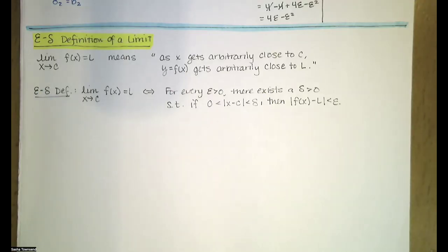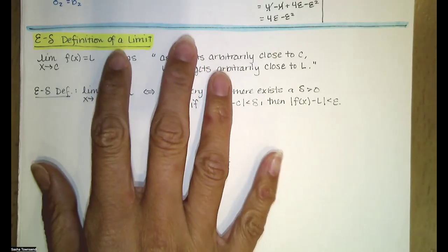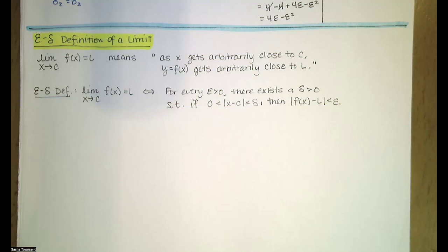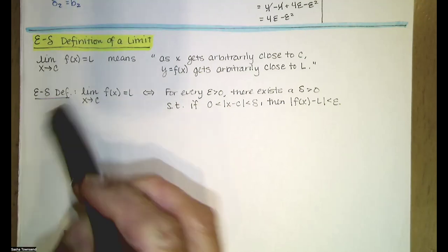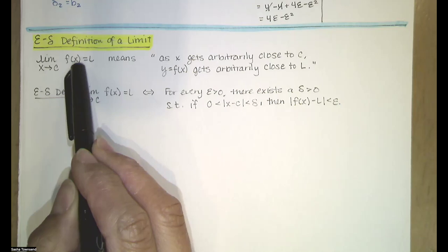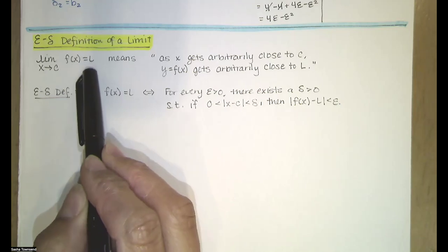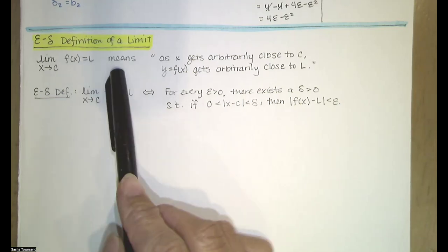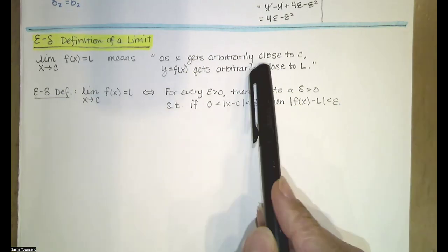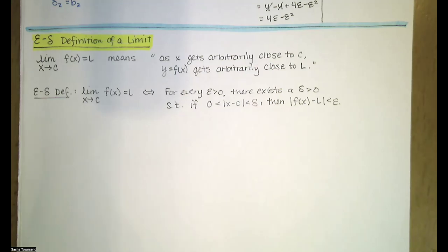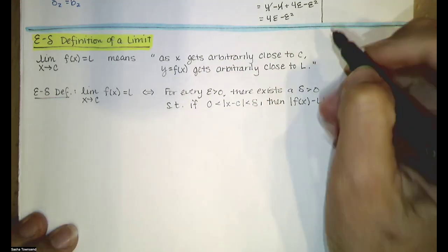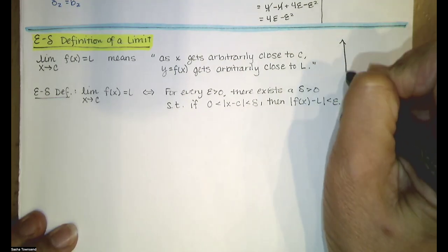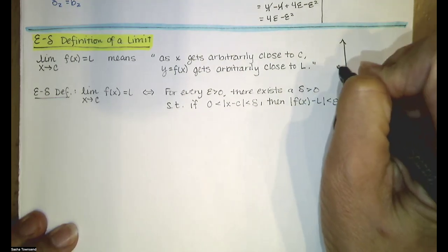In this video, we discuss the epsilon-delta definition of the limit. Recall that the limit as x approaches c of f(x) equals L basically means that as x gets arbitrarily close to c, the y values on the graph get arbitrarily close to L.